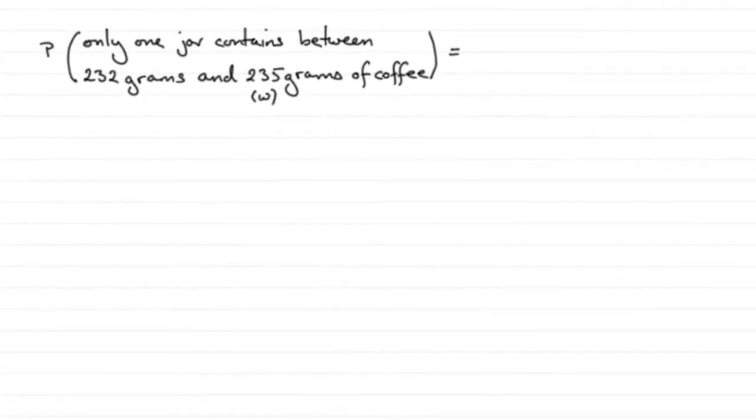Now, in this last part, we're told that two jars of coffee are selected at random, and we've got to find the probability that only one jar contains between 232 grams and W grams of coffee. And in the previous part, we found that W was 235 grams. So, how would I do something like this?